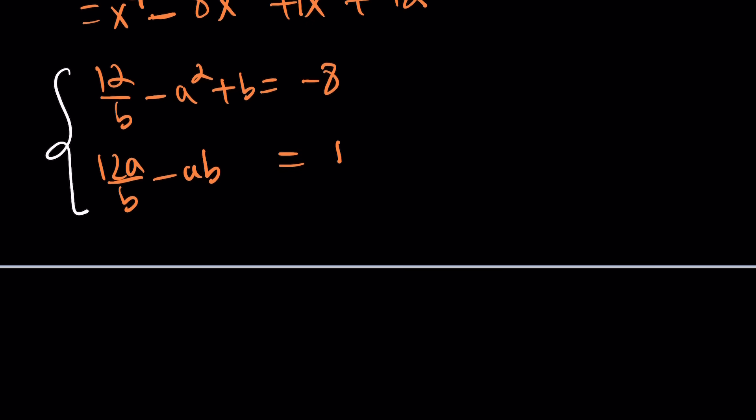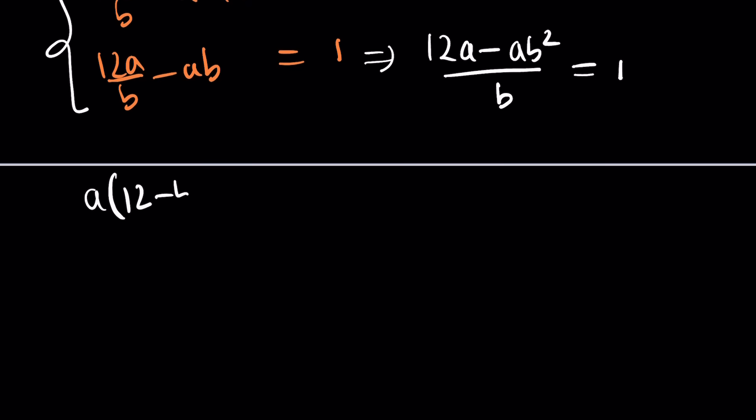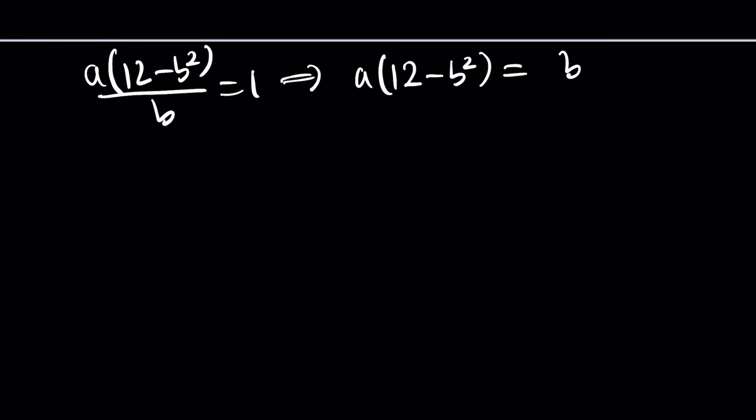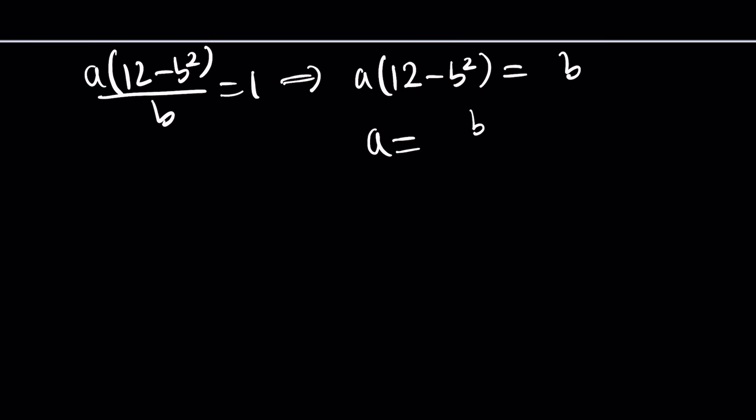How do you solve it though? That's complicated. From the second equation, you could probably solve for something. Make a common denominator and then factor out a. Cross multiply. Step by step. We're getting there. Divide by 12 minus b squared. This gives you a in terms of b.